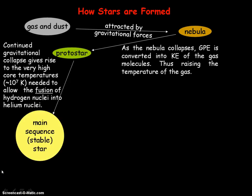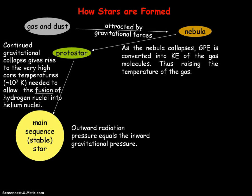Now we have our star, because fusion is occurring, and this stage is called the main sequence — the stable stage in the life of a star. That's because the outward radiation pressure from fusion balances the inward gravitational collapse. Our Sun is currently in its main sequence stage and is about halfway through, so it has another 4.5 billion years to go.